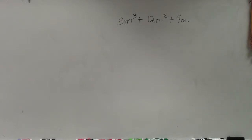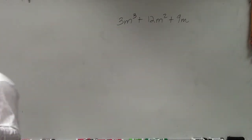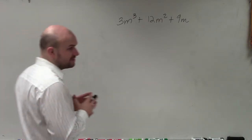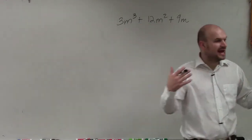So in this example here, I have 3m cubed plus 12m squared plus 9m. The main important thing, the first thing you have to look at is always exactly what we talked about at the beginning of class. Always look to try to factor out the GCF. Look for common terms or numbers, variables that they have in common.